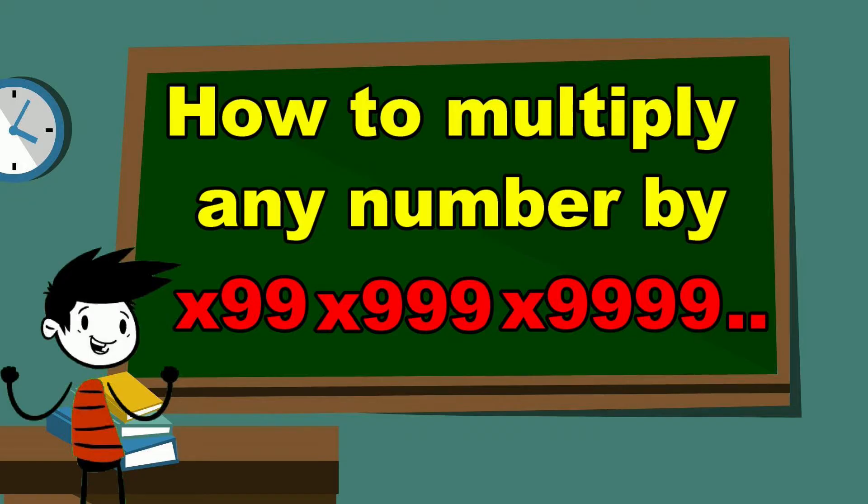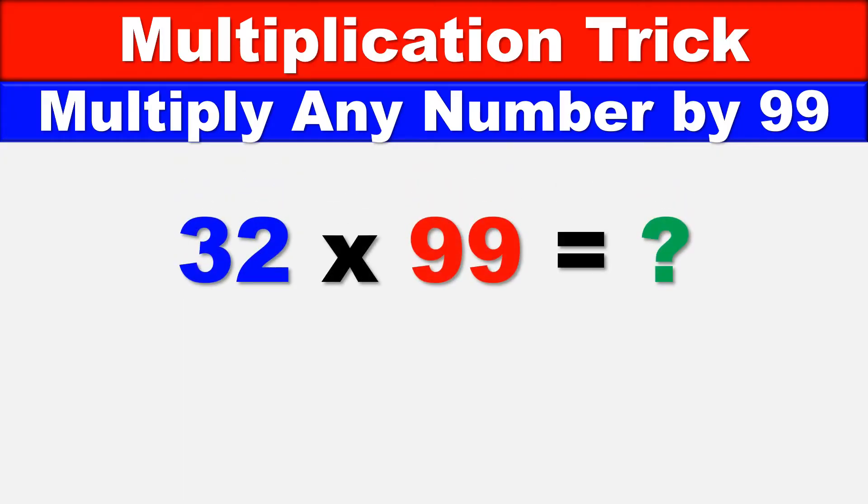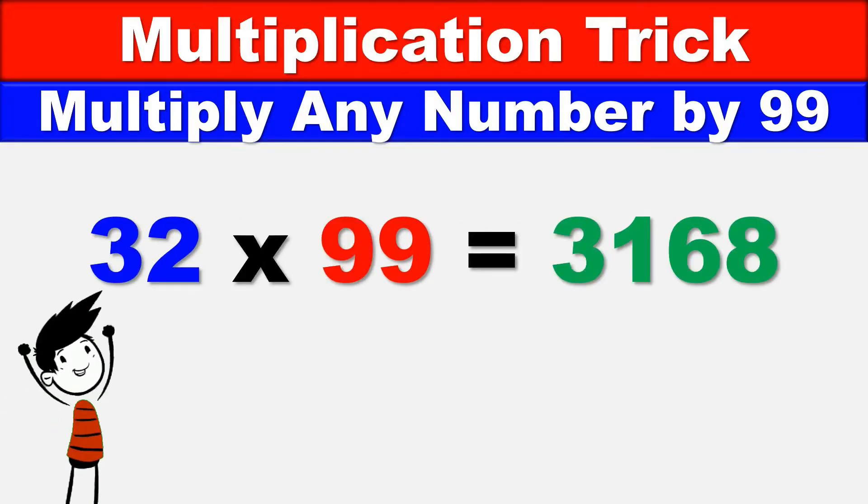What is 32 times 99? Solve this in five seconds. Your time starts now. The correct answer is 3168.